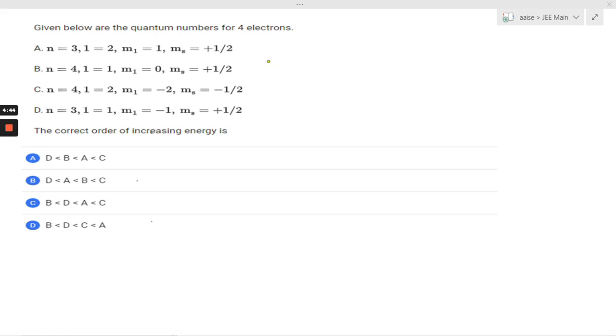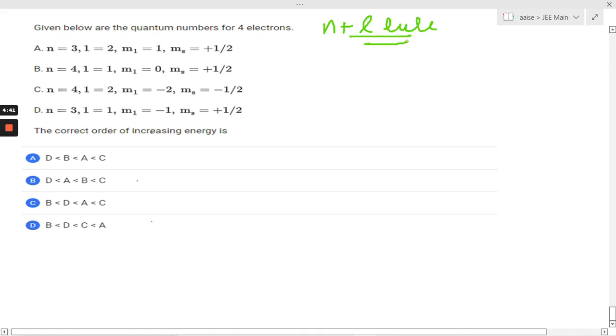We are going to solve this question with the help of the N plus L rule. Given below are the quantum numbers for four electrons. The correct order of increasing energy.